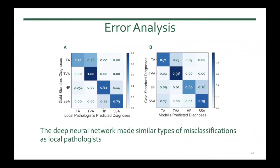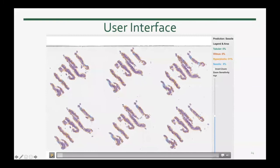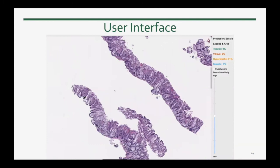We also performed error analysis, and as you can see in the confusion matrices for local pathologists and our model, the types of errors both make are pretty similar. We also implemented a simple visualization approach that highlights the patches contributing most to the whole slide label, and integrated this visualization with an easy-to-use graphical interface so pathologists can use it in their practice.